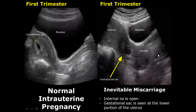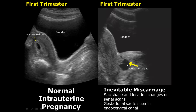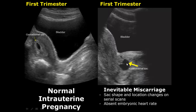In an inevitable miscarriage, the internal os is open and the gestational sac is seen at the lower portion of the uterus. Usually the gestational sac is seen higher up. In this image you can see a change in the shape and location of the gestational sac. On repeated scans, the gestational sac can be seen changing its position and moving downwards, and may also change its shape. The embryonic heart rate may also be absent in an inevitable miscarriage.